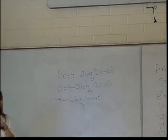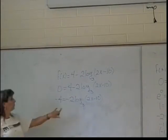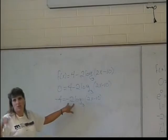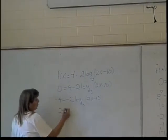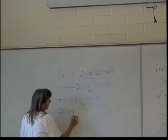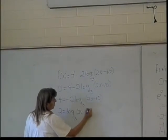And then? You divide by negative 2. I can divide by negative 2. It'll make life easier if I do that here instead of dealing with putting it up as an exponent. So it'll be 2 equals log base 3 of 2x minus 10.